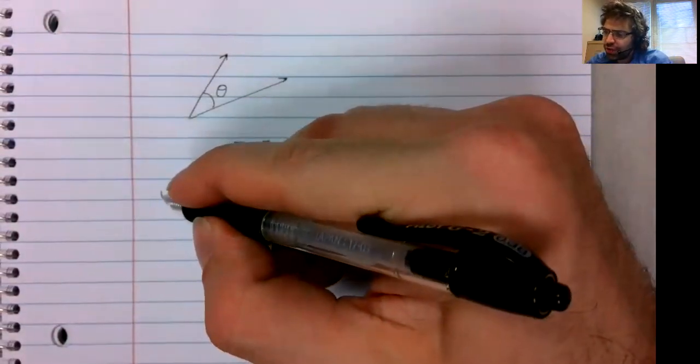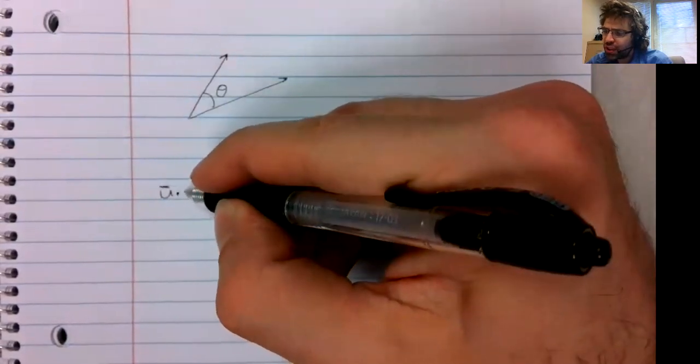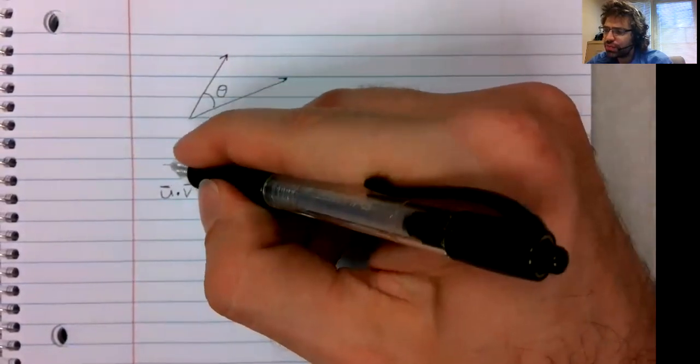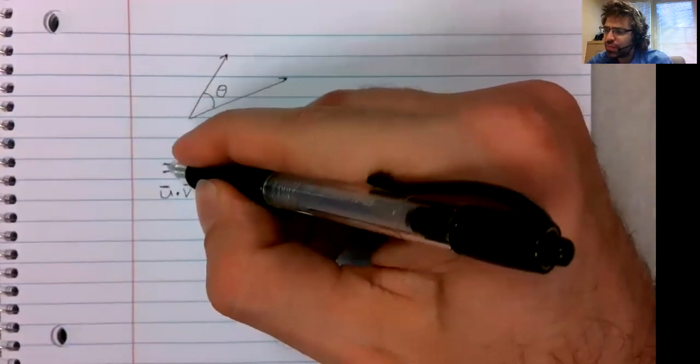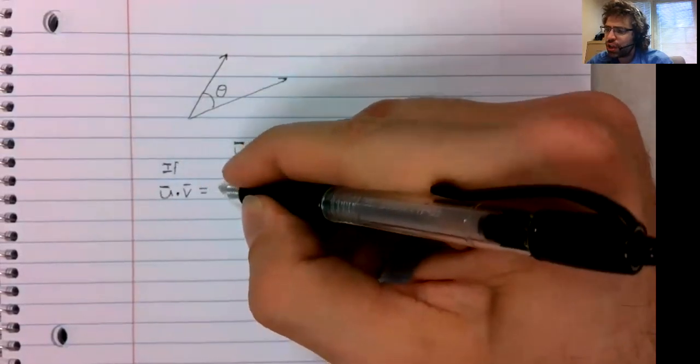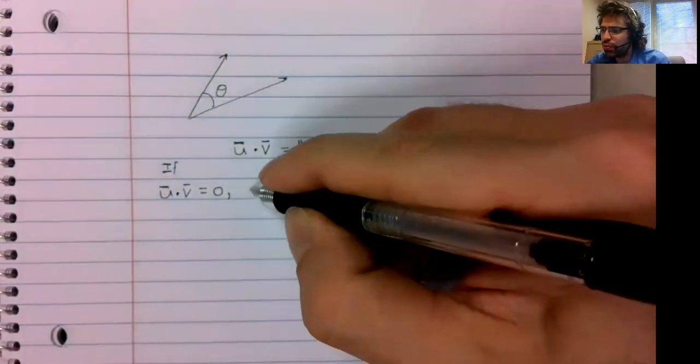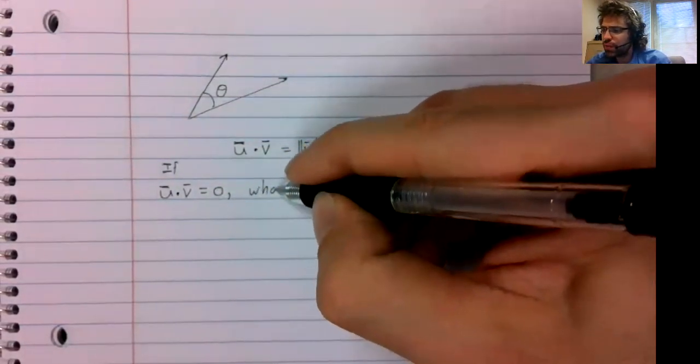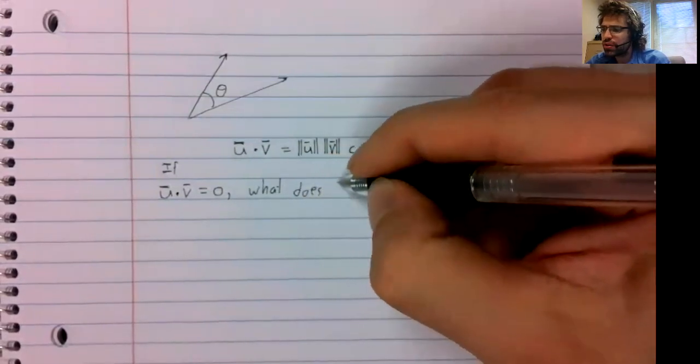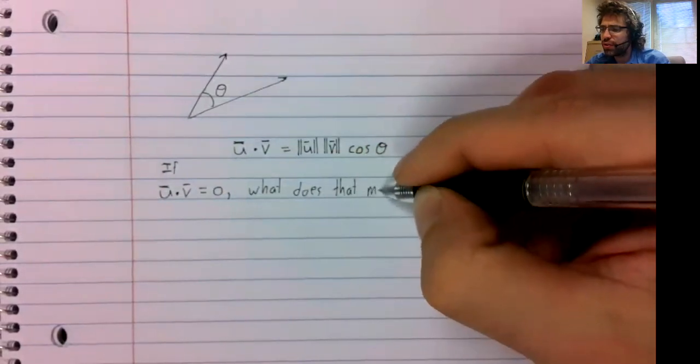What's that mean for us? It helps us answer the question. If a dot product is zero, what does that mean?